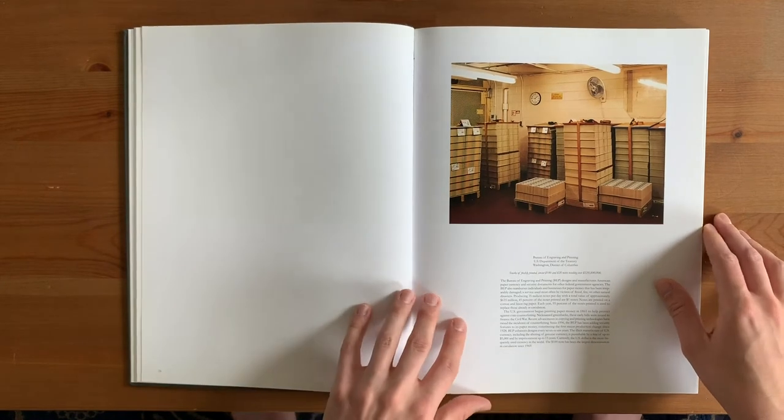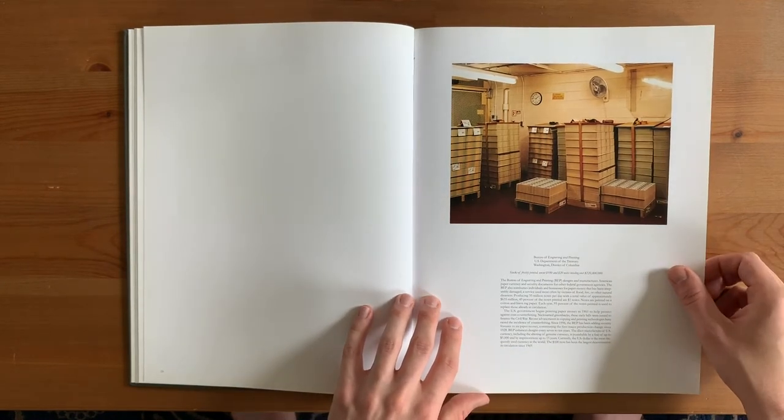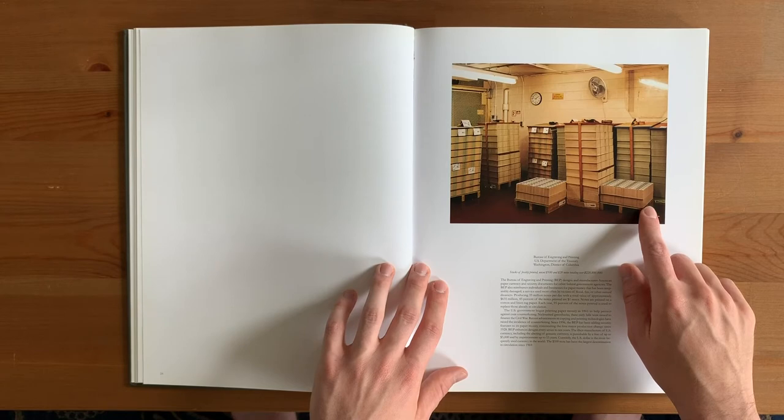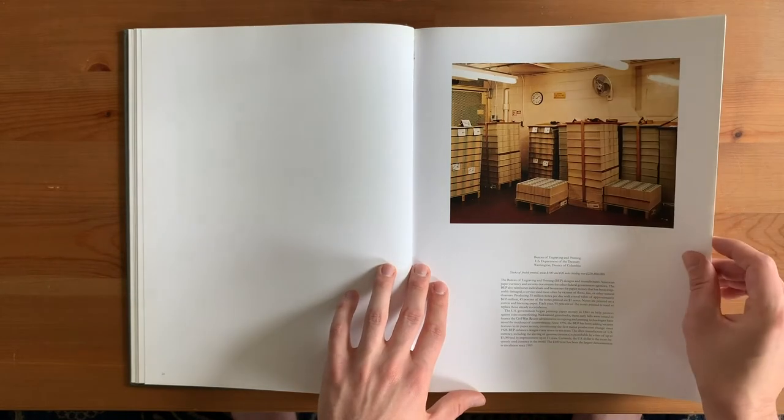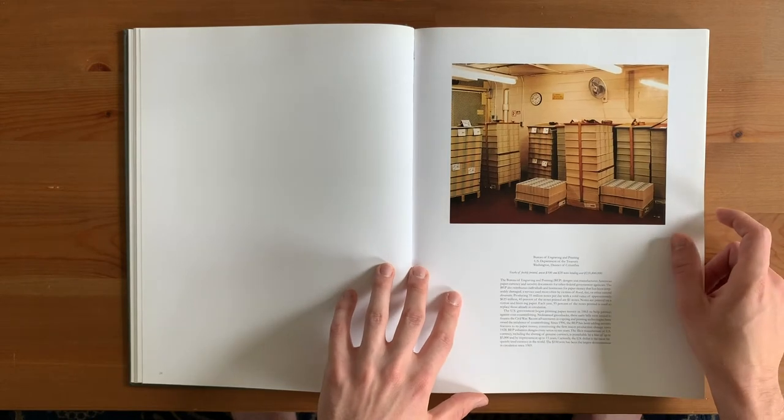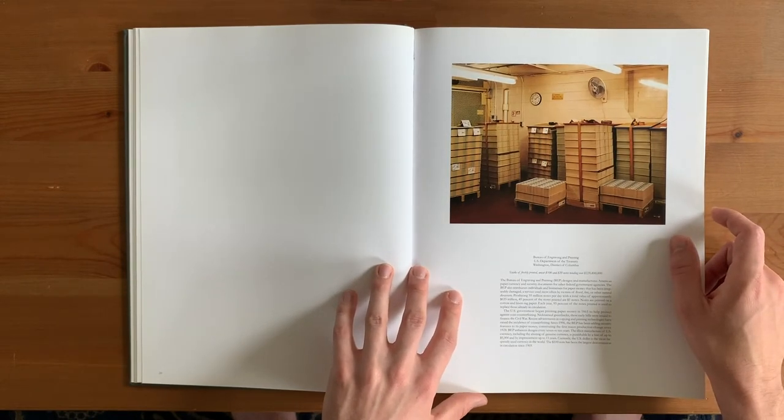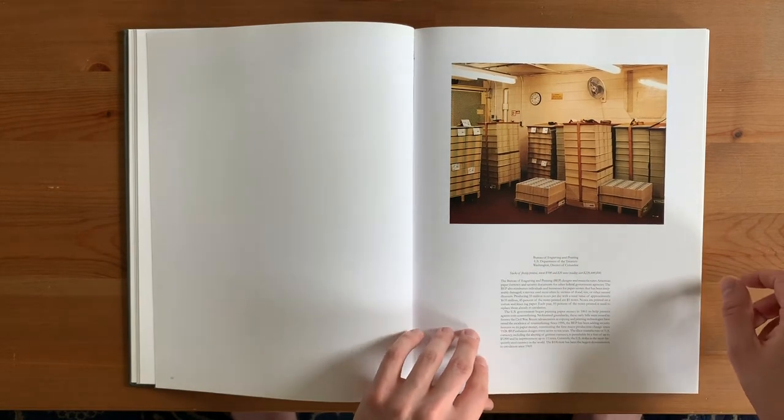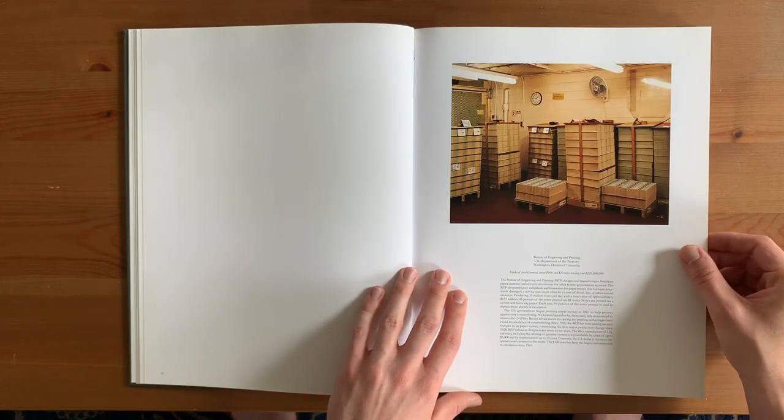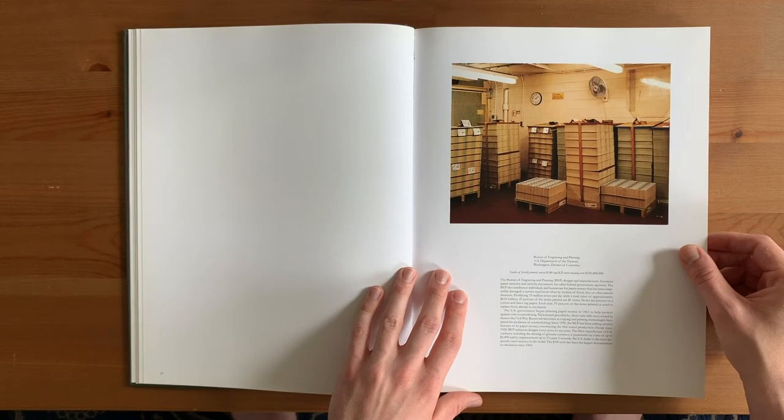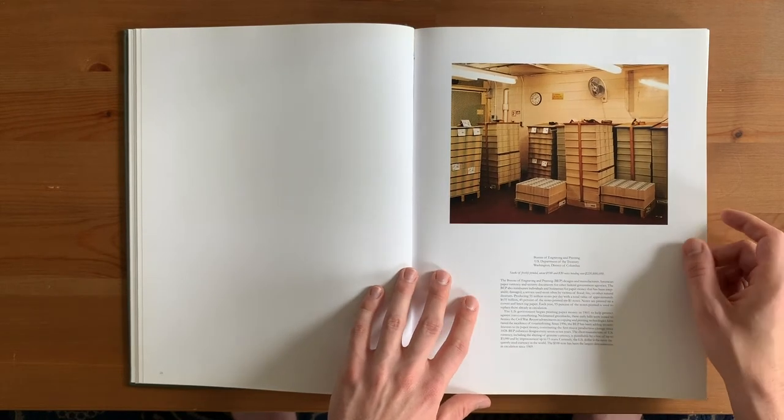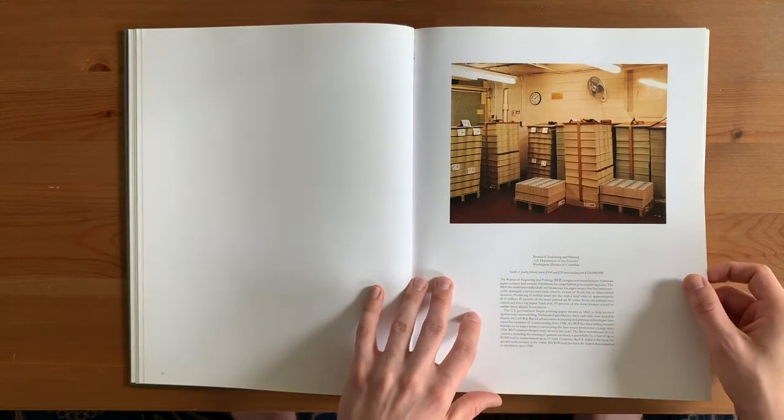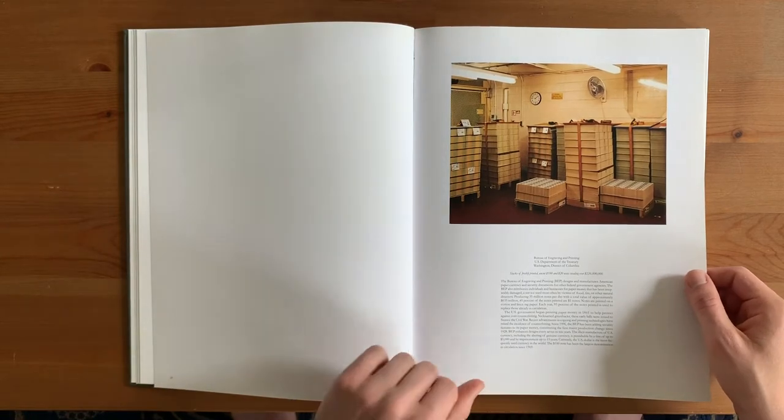So this is a Bureau of Engraving and Printing, U.S. Department of the Treasury. So what you're seeing here are stacks of money. And what serves so well this project is how boring she makes some of these facilities look. They're not boring pictures, but you can see some of the bureaucratic structures of any government or large institution. There's no fiendish men in the basement curling their mustaches diabolically. There's cash on pallets and a crappy cheap wall fan and a crappy cheap clock on the wall with millions and millions of dollars on pallets.